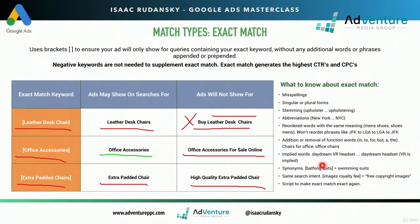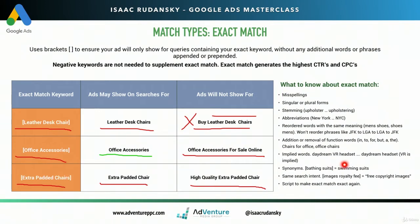Implied words: Google gives the example of 'Daydream VR headset' — VR stands for virtual reality. If Google knows that Daydream is a virtual reality headset company and a person searches for 'Daydream headset,' they might consider the word VR to be implied with the same meaning. They still won't show 'Daydream headset for sale' because 'for sale' wasn't part of your keyword. But if a word is specifically inherent to that product, Google retains the right to trigger your exact match keyword.